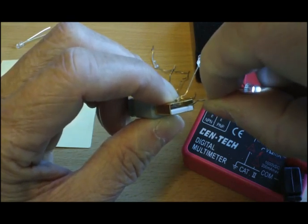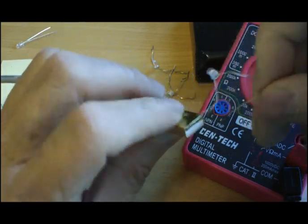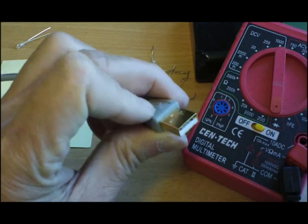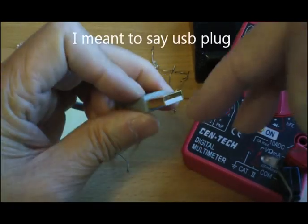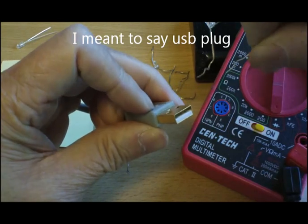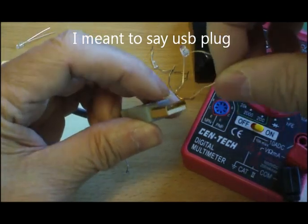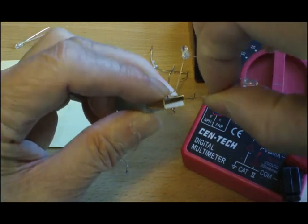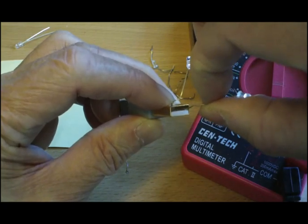Just touch the contact pin. Usually, if your LED is facing up like this with the plastic and the bottom, the right-hand pin would be the positive. You can see the LED light up.